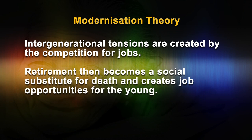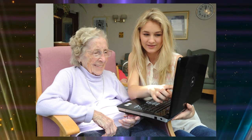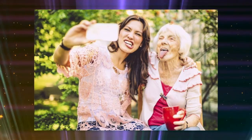Thus, intergenerational tensions are created by competition for jobs. Retirement then becomes a social substitute for death and creates job opportunities for the young. However, the dominance of the prevailing work ethic results in a devaluing of retirement. Additionally, economic and technological developments devalue the employment skills of the old. Urbanization attracts young people from rural areas, resulting in a breakup of the extended family. Finally, the development of mass education reduces the hold older people have over younger people. These changes contributed to a decrease in the status of older people in modern society.